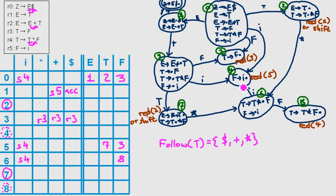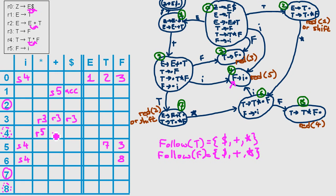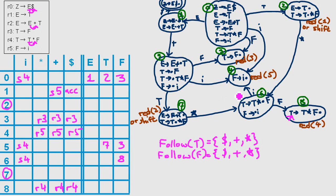Next is state number four. We have the same situation — this time we have an F here, so we're interested in the follow function of F, which gives us the exact same characters. We apply rule number five to all those characters. Next let's check state number eight. Same game — we apply rule number four, but not to 'i' because it's not in the follow set.